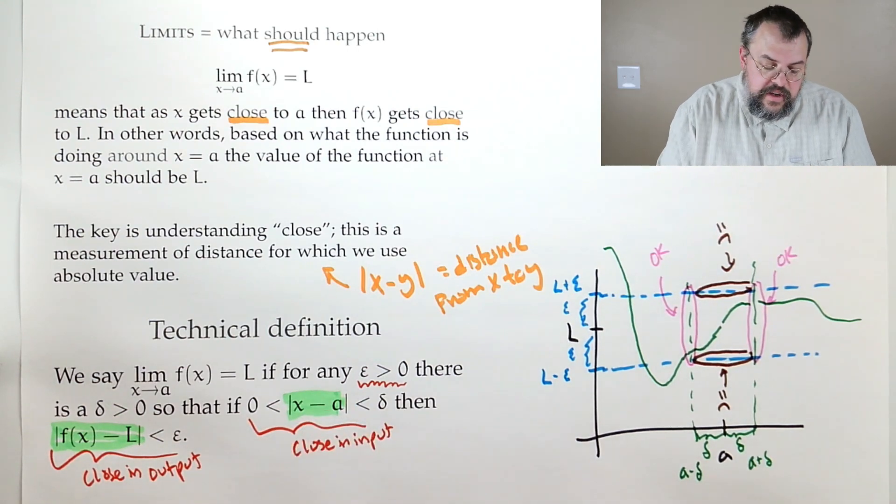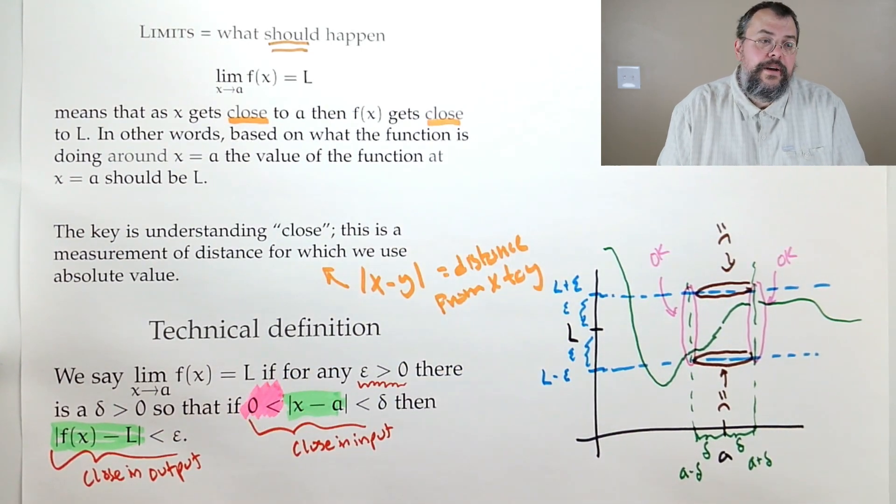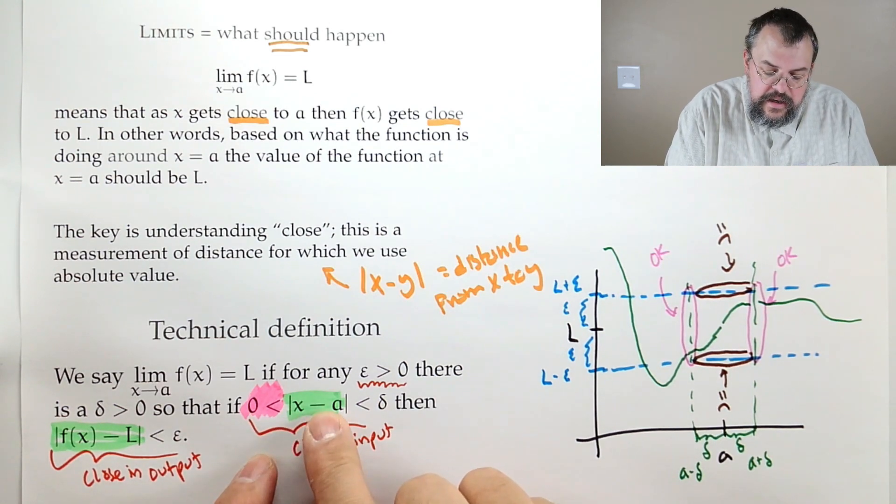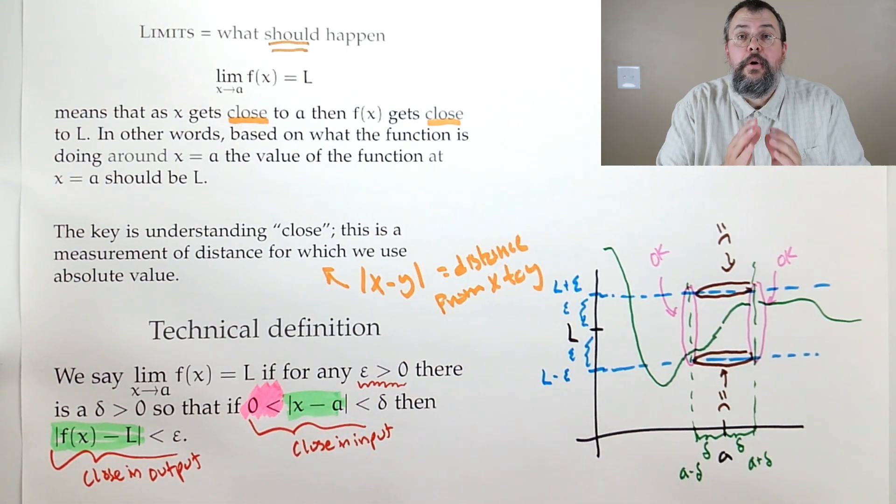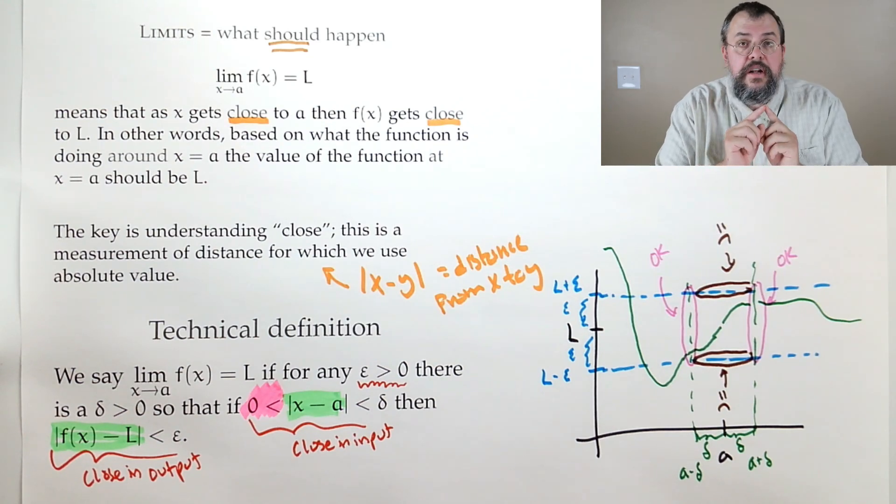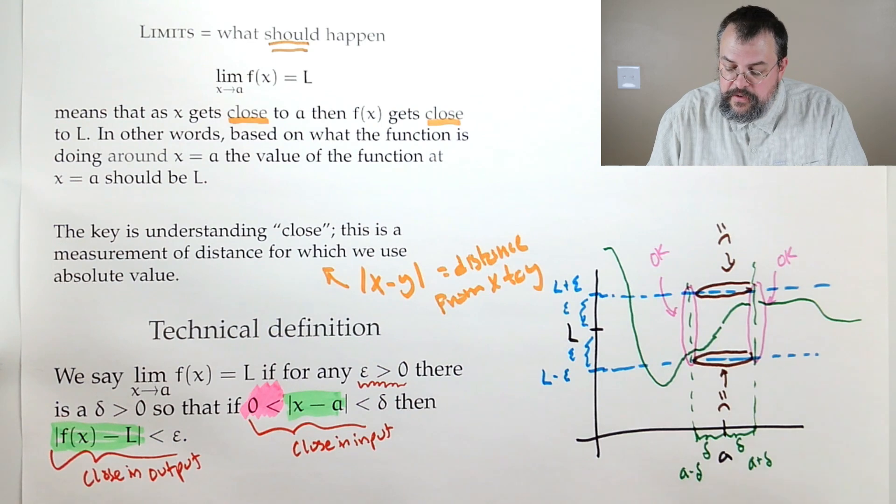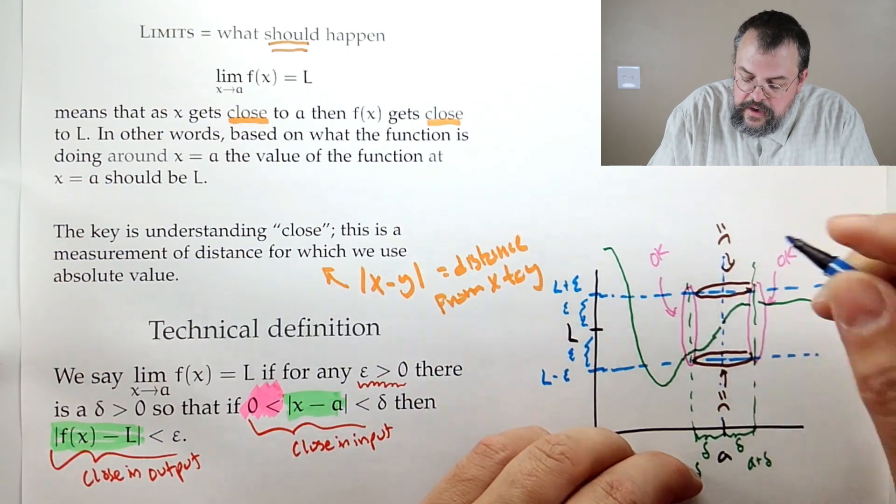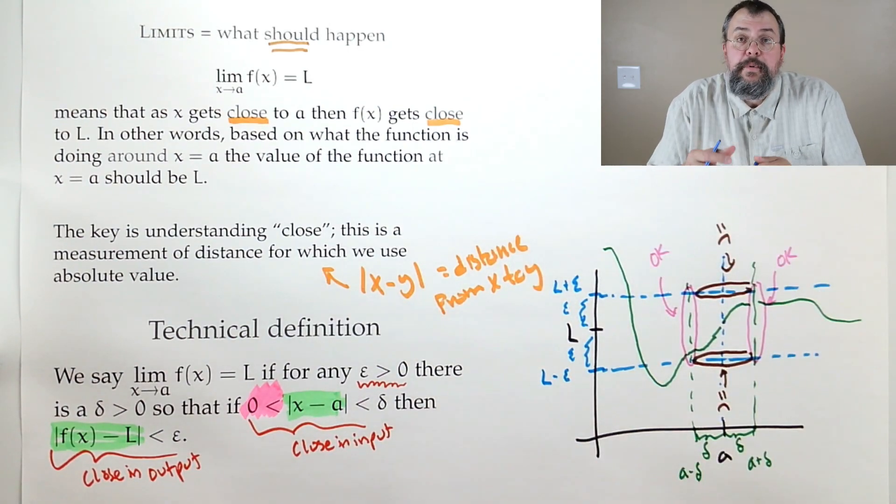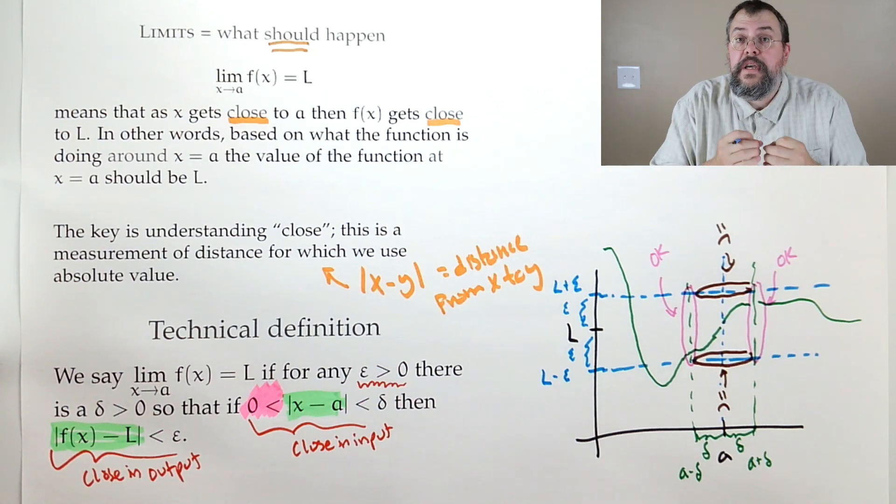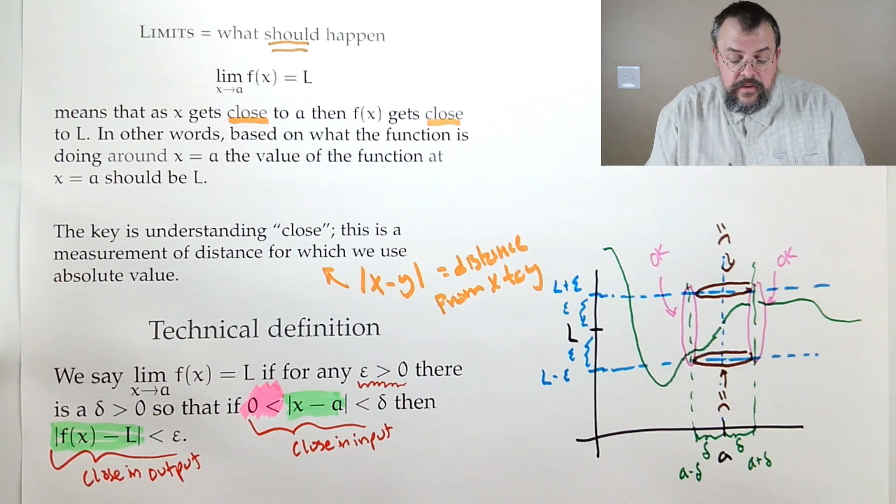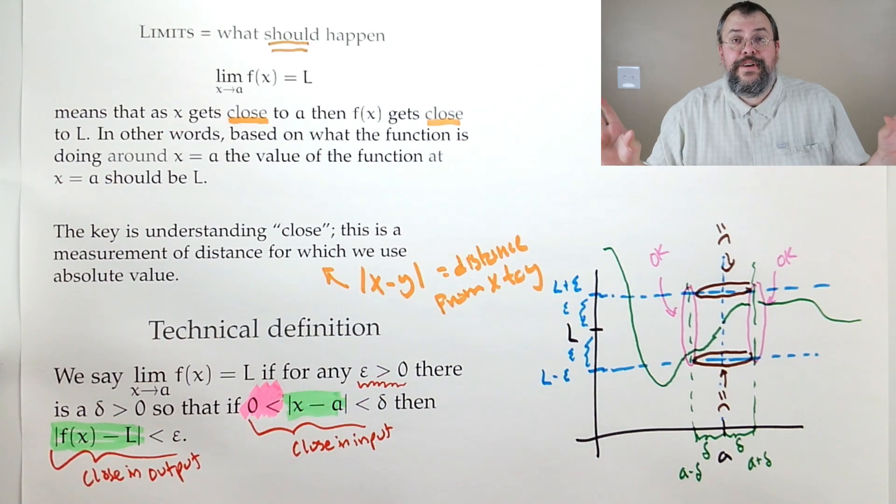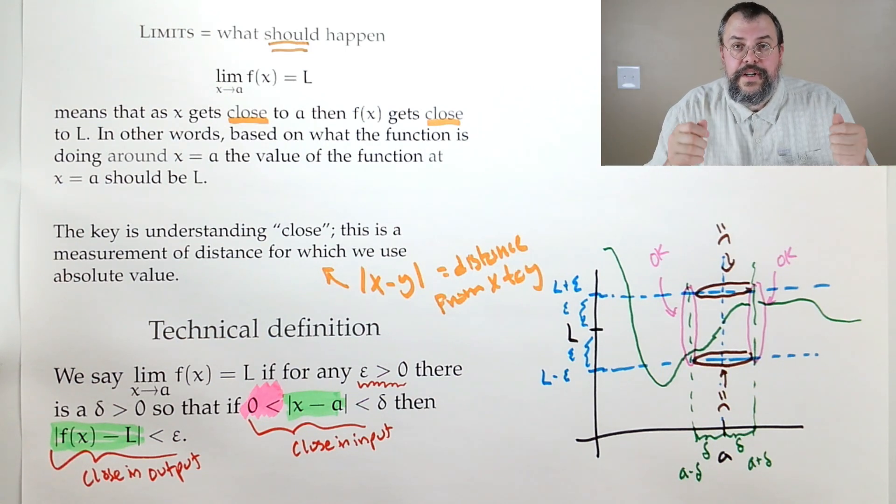But did you notice this little piece here? This part right here. Why is that there? Well, what is this saying? So 0 is less than |x - a|. What that says is you can ignore a. So there was one piece missing from my picture. Namely, there should be a diagonal line here. So I don't care what the function does at a. Because the function might not be defined at a, or it might be poorly defined at a. So that's why we add this constraint. Because we don't want to know what does happen, so we ignore what does happen. Our goal is to ask the question, what should happen?